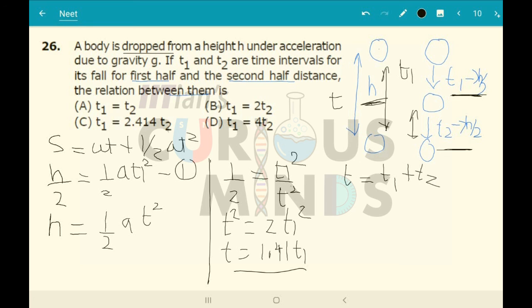To travel this distance plus this distance, total time t is where we substitute 1.41t₁ = t₁ + t₂. So t₂ will come out to be, if I subtract it, equal to 0.41 times t₁. I'll take this to the left side, so 1.41t₁ minus t₁ equals 0.41t₁.